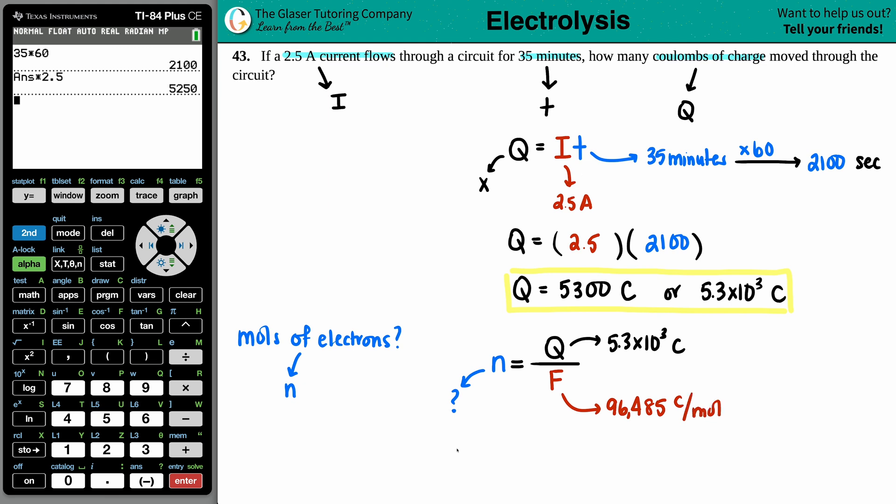So if I just plug it in, number of moles equals our coulombs, which is 5.3 times 10 to the 3rd, and then that's divided by Faraday's constant, 96,485. And then we will get our n value, which is the number of moles.